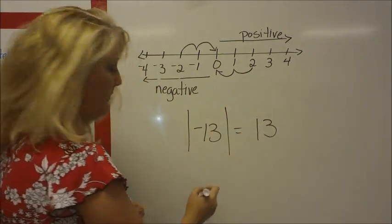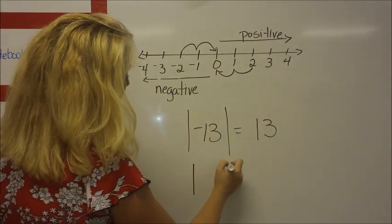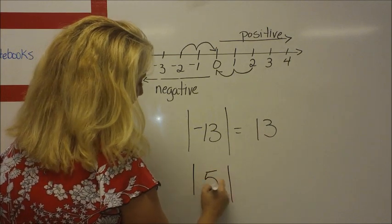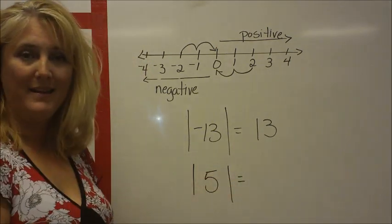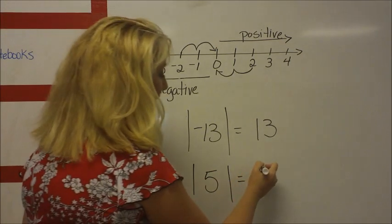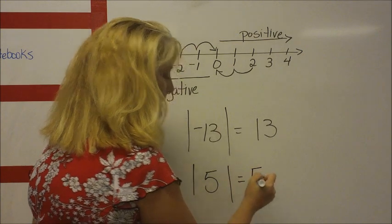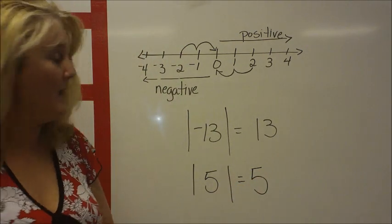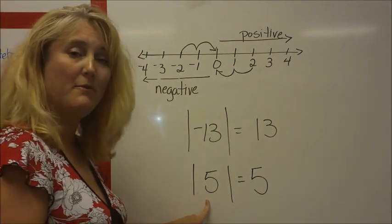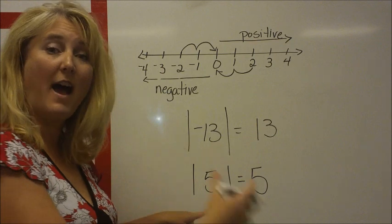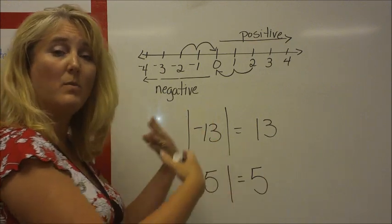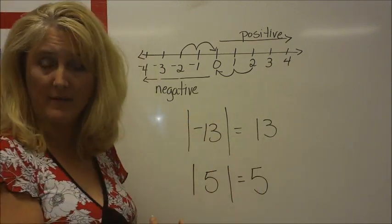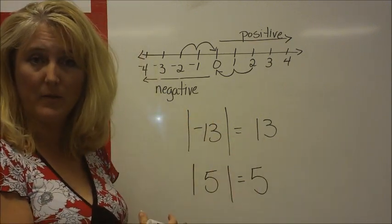The absolute value of 5 is still 5 — it's not negative 5, it's not the opposite, because the number 5 is 5 units away from zero. It doesn't matter which direction you're traveling.